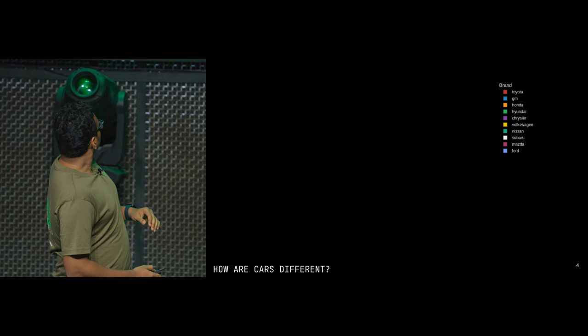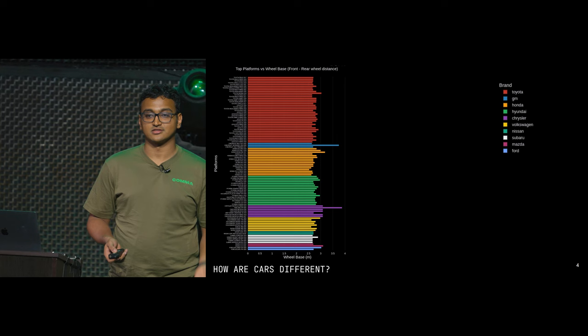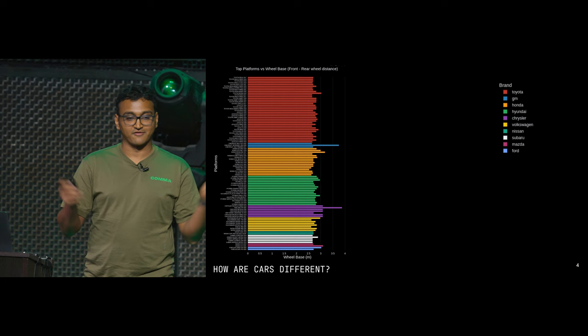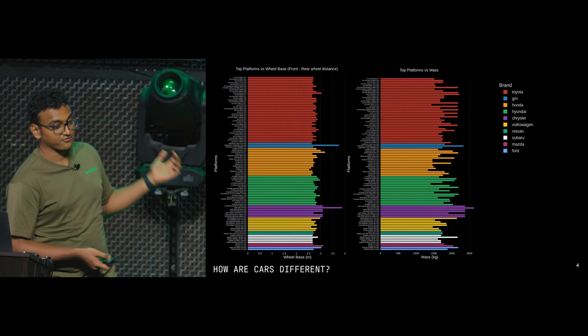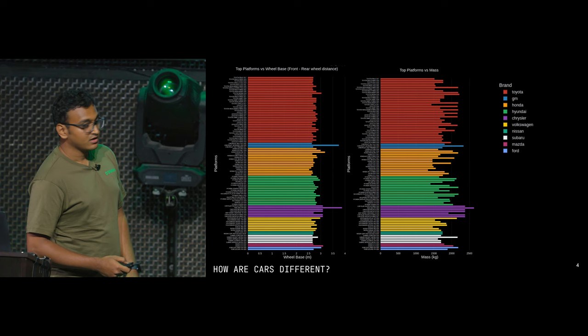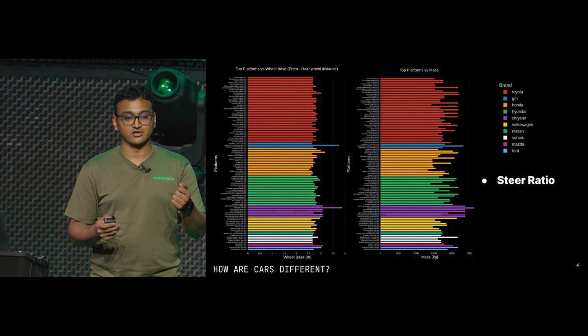These are some of the brands that we support. Some ways in which cars are different: the wheelbase is different — that's the distance between the front and the rear wheel. Different cars have different sizes, so the wheelbase is different. They also have different widths and, as a consequence, different masses. We support from tiny cars all the way to the RAM. Cars are also different when it comes to steering ratio — how much your car turns with how much the steering wheel turns — and that is different in each platform and across brands.